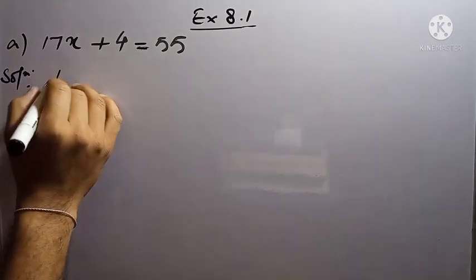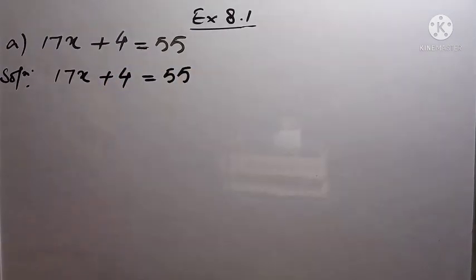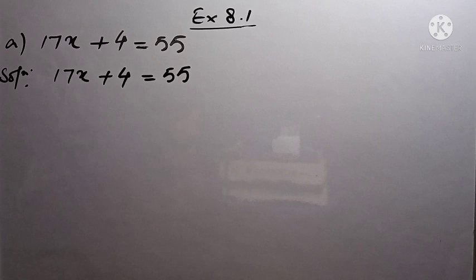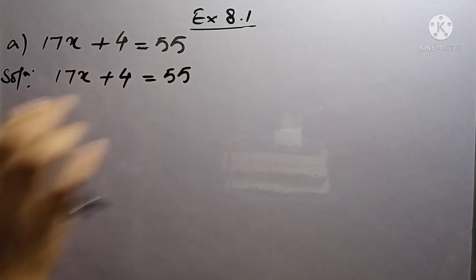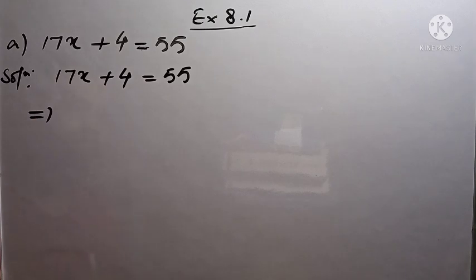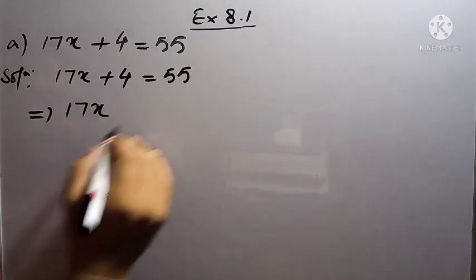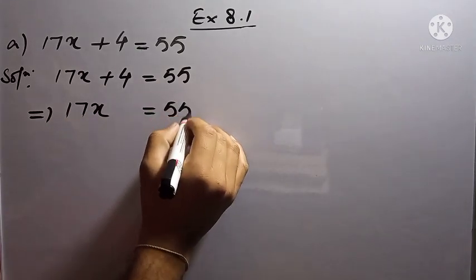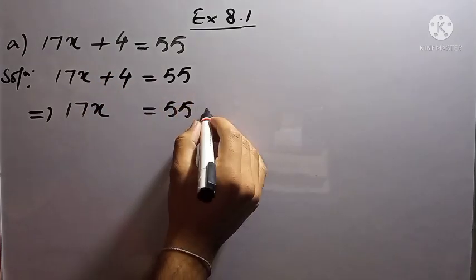Solution: 17x plus 4 equal to 55. The question says we have to solve first and then verify the answer. On the left hand side we have two terms: 17x and 4. But I want to know the value of x, so I will keep the term having x on the left hand side. I write 17x on the left hand side, equal to 55. Then I will send this plus 4 to the other side so that it becomes minus 4.